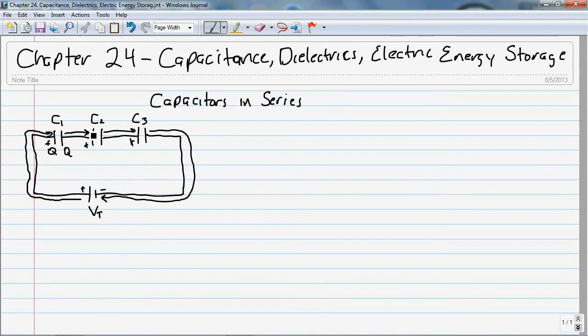And when the charge from C1 goes to C2, only Q amount can collect on the left plate of C2, and only Q amount of charge can leave the right plate of C2, and only Q amount of charge can collect on the left plate of C3, and only Q amount of charge can leave the right plate of C3 to go towards the negative charges.